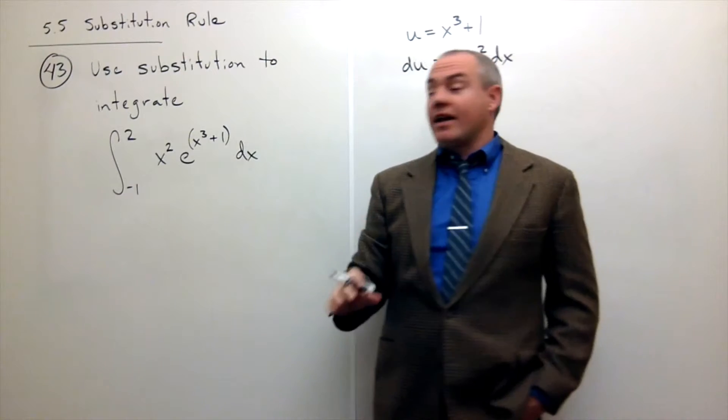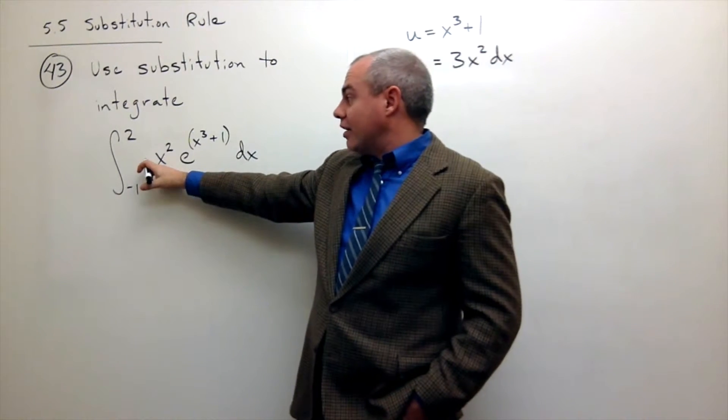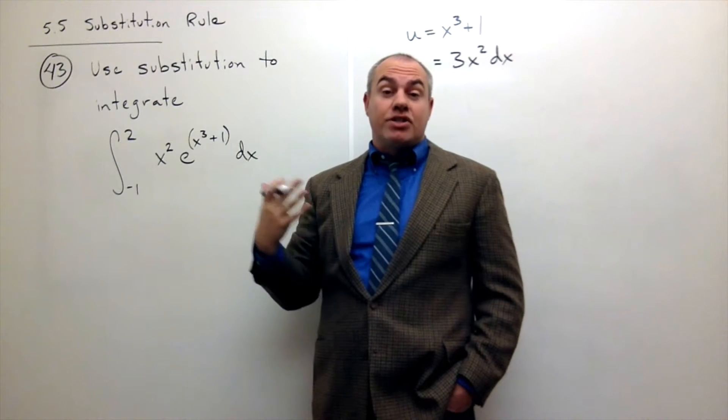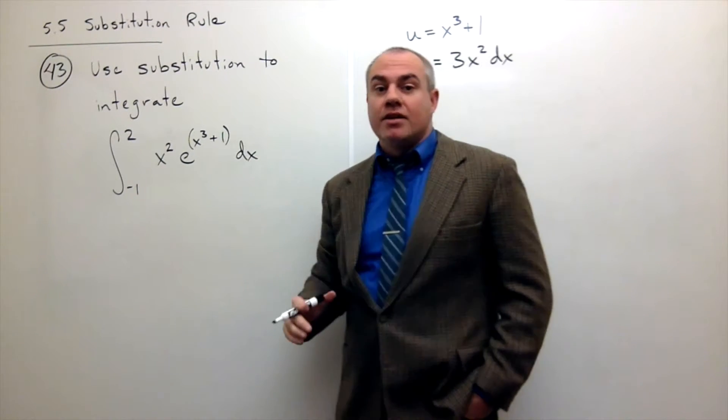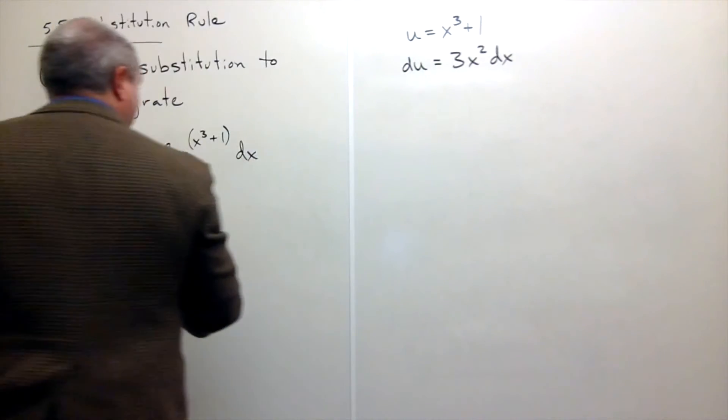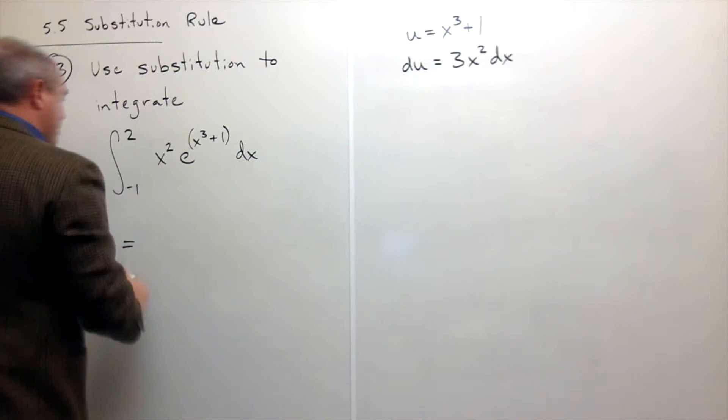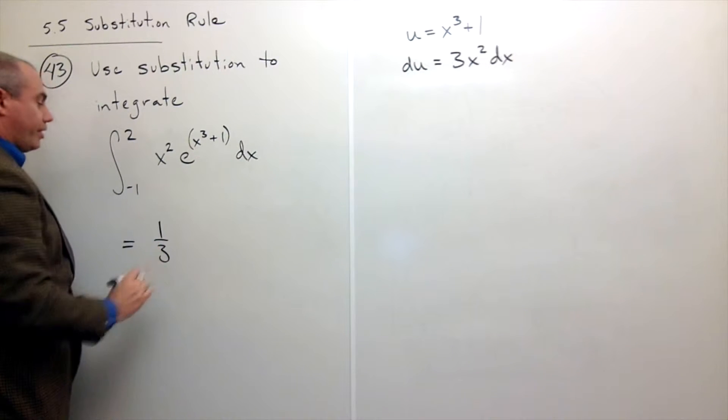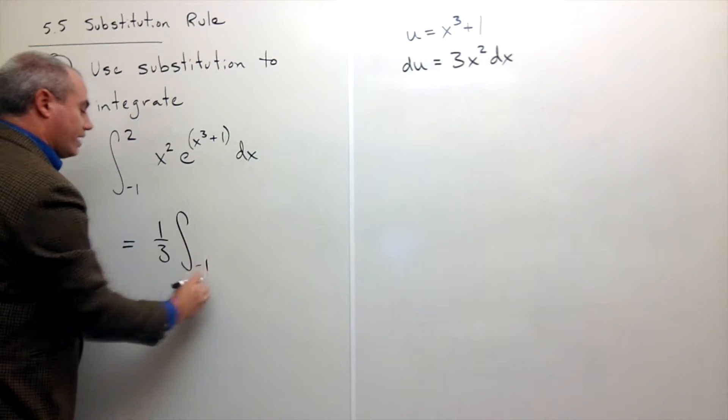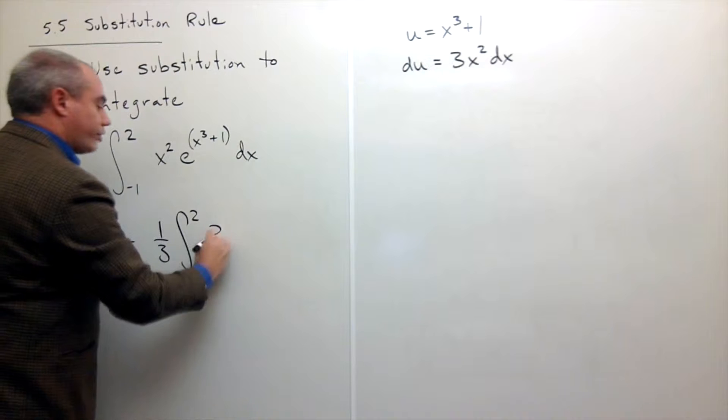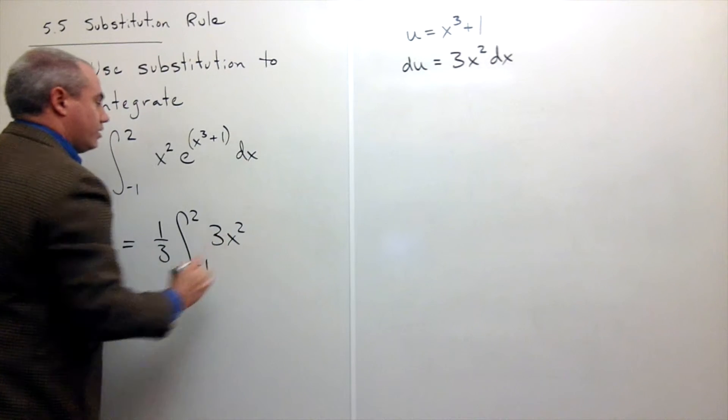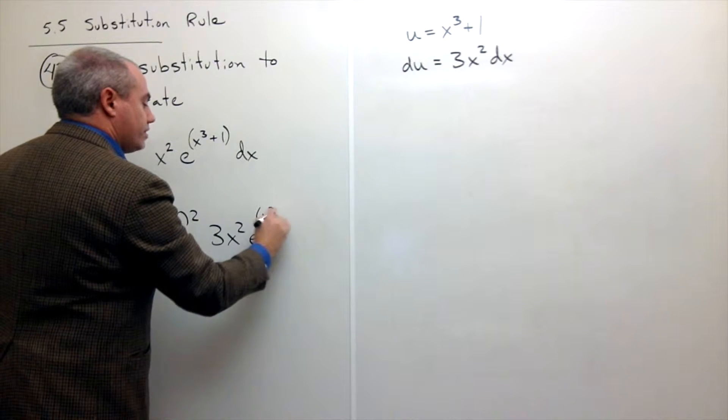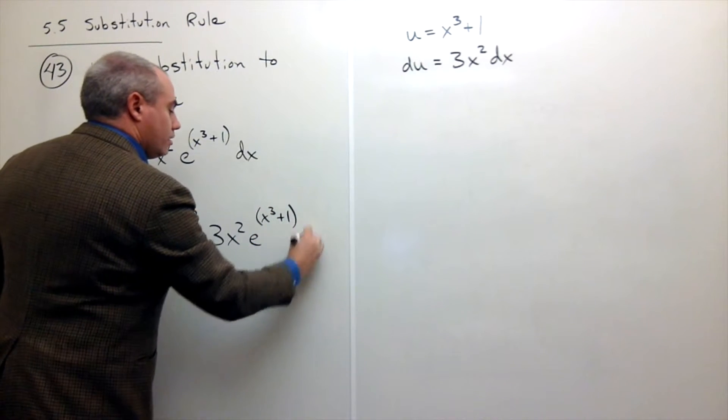So to compensate for that, I want to write a 3 in here, but also multiply by a 1 third outside to be just multiplying by 1. So let's rewrite this. So this is equal to, I said I want a 3 on the inside, so I'm going to have a 1 third on the outside. So I have negative 1 to 2 of 3x squared times e to the power x cubed plus 1 dx.